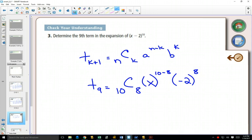So step 1 is just gathering stuff and putting it into the formula and making sure you know what values come from what. n comes from the exponent. K is always 1 less than the term number because it's term K plus 1.